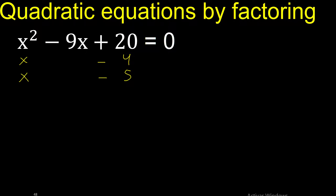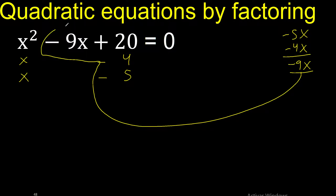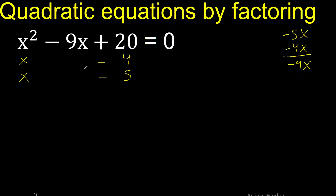Let's analyze if it is correct like this: x multiplied by minus 5, and x multiplied by minus 4 gives minus 9x. Equal — therefore, it is correct. Therefore, like this.